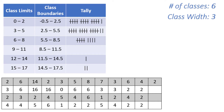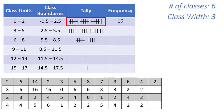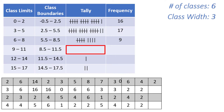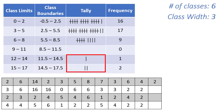In the first class we have 3 groups of 5 plus 1 additional observation to make 16, which is what we record in the frequency column. For the 3 to 5 class we have 3 groups of 5 plus 2 tallies, which makes 17. We have 9 in the third class, 0 in the fourth class, and 1 and 2 in the last two classes. These values represent the number of presidents who had the number of children indicated by the class limits.